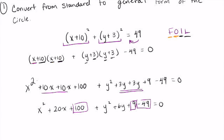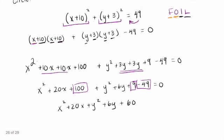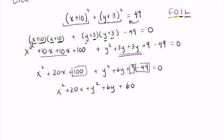So I can rewrite this as x² + 20x + y² + 6y + 60. And then again I want it in the ax² + by² form, so my final form that I'm going to write is going to be x² + y² + 20x + 6y + 60 = 0.